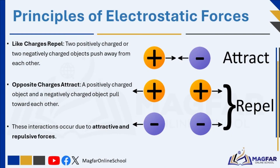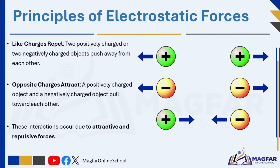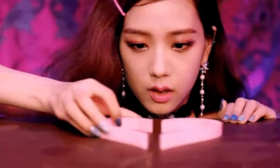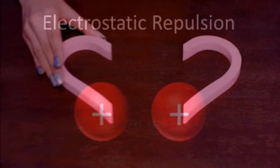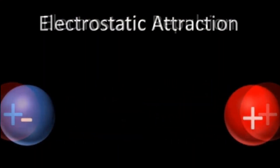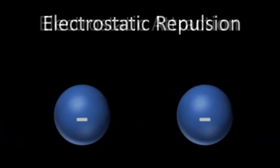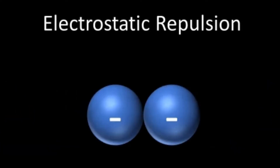Charged objects have an influence on each other. Two positively charged objects repel each other. Two negatively charged objects repel each other. A positively charged and a negatively charged object attract each other. That is why we say like charges repel and opposite charges attract. This attraction and repulsion is caused by attractive and repulsive forces, which work at a distance.